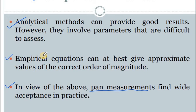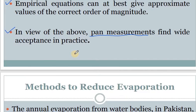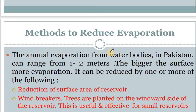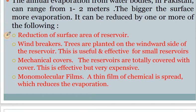After that, one of the methods to reduce evaporation — the annual evaporation from water bodies in Pakistan can range from one to two meters per year. Such a loss of water is significant, and the bigger the surface area, the more the evaporation. So one method to reduce evaporation is by reducing the surface area of the reservoir — less surface area available will reduce the evaporation.